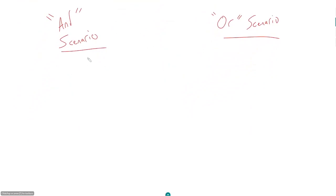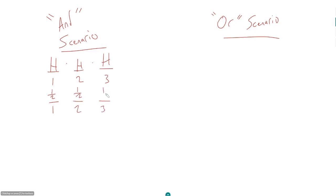So what does it mean to have an 'and' scenario? Most people think of 'and' as meaning you multiply your probabilities. If I ask: you flip a coin three times, what is the probability of getting heads all three times? You have a 50% chance on the first flip, a 50% chance on the second, and a 50% chance on the third. Because 'and' means multiply: one half times one half times one half gives you one eighth overall. 'And' scenarios are usually the easy ones.